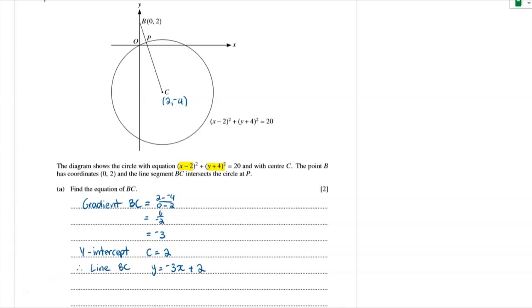For part B, we need to find the coordinates of P. And what we would notice from the diagram is that this is the intersection of the line and the circle. But that line doesn't stop. It keeps going. And so it actually will intersect the circle twice. And we want the one with the smaller x value.